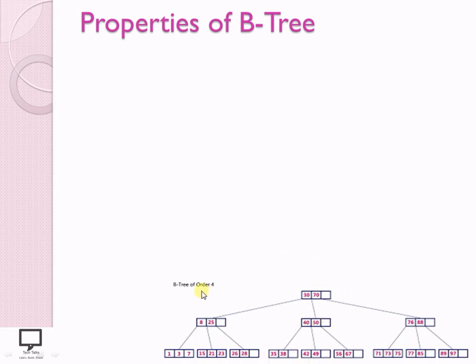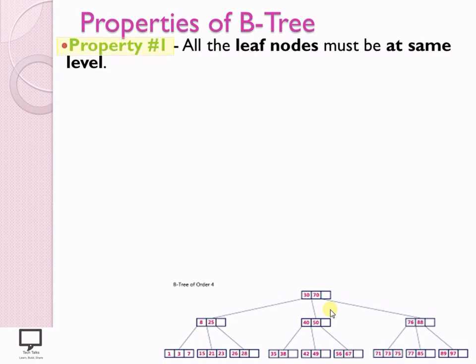This is an example of order 4, where every node can store a maximum of 3 keys and have a maximum of 4 children — this is a 4th-order B-Tree. The first property is that after performing any insert or delete operation, every leaf node must be at the same level. Here you can see that all 9 leaf nodes are at the same level.